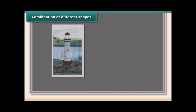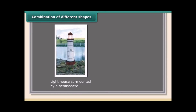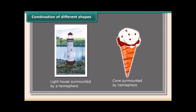Combination of different shapes: a lighthouse surmounted by a hemisphere, a cone surmounted by a hemisphere. These are examples of combinations of different shapes that we use in our day-to-day life.